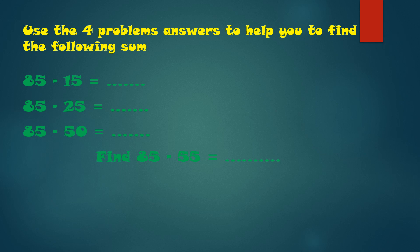5 minus 5 is 0, and then let's do the tens: 8 minus 1 is 7, so the answer is 70. And 85 minus 25: 5 minus 5 is 0, and 8 minus 2 is 6, so the answer is 60.